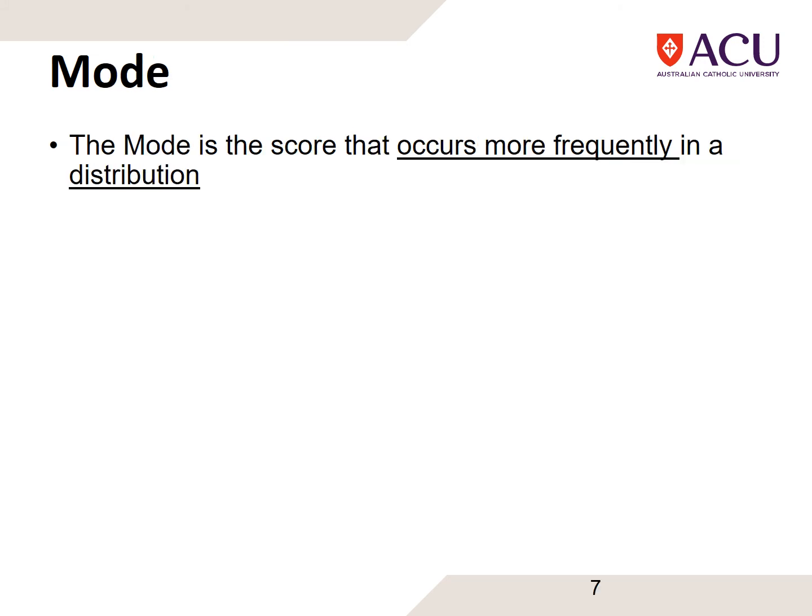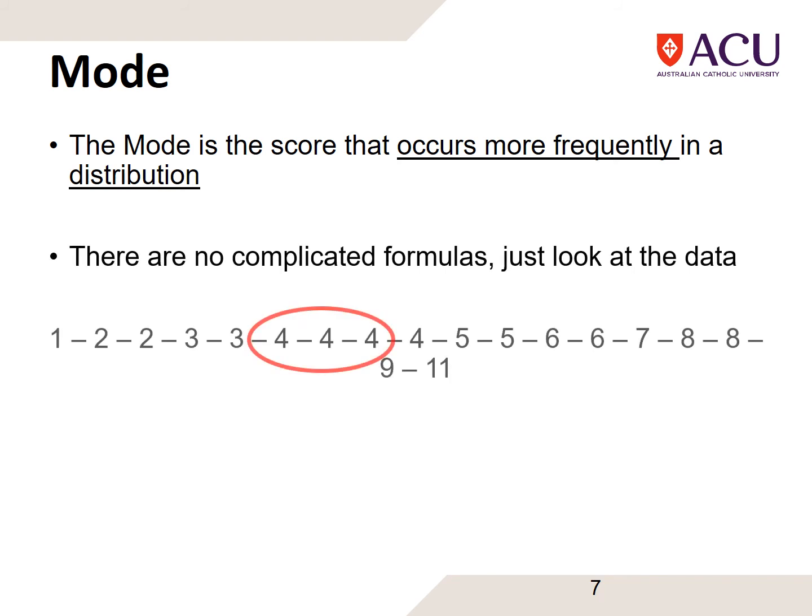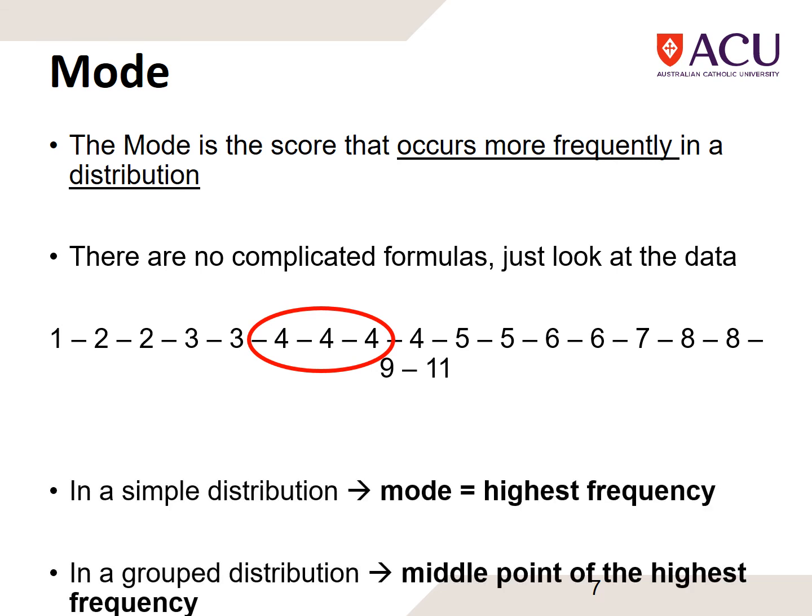The mode, the last of the three central tendency measures, is the score that occurs with the most frequency. There are no complicated formulas—you just look at the data and find the most common one. In this data set, there are more fours than any other numbers, so the mode is four.